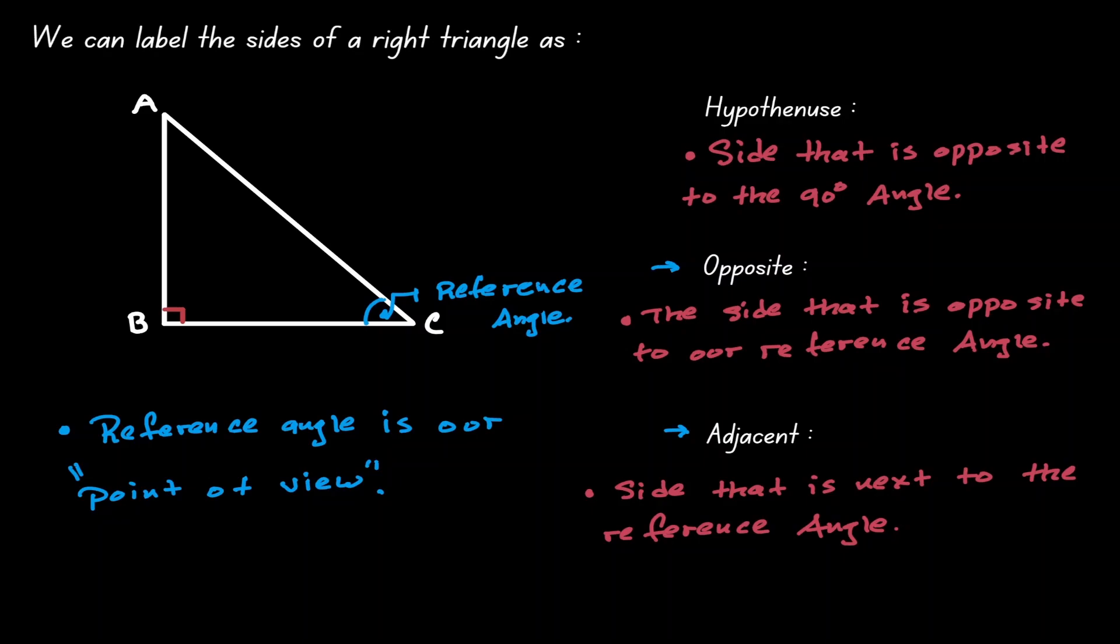Because now we have a different point of view, our labeling is going to look a little bit different. The hypotenuse does not change because that is still the same side that is opposite to 90 degrees.